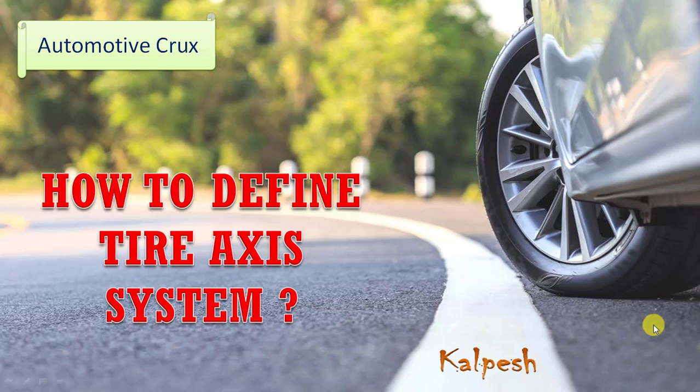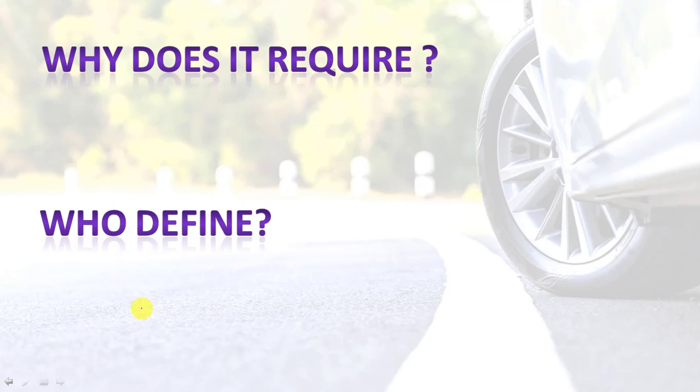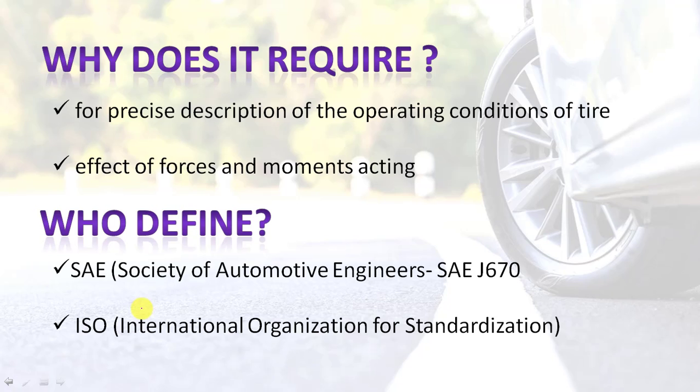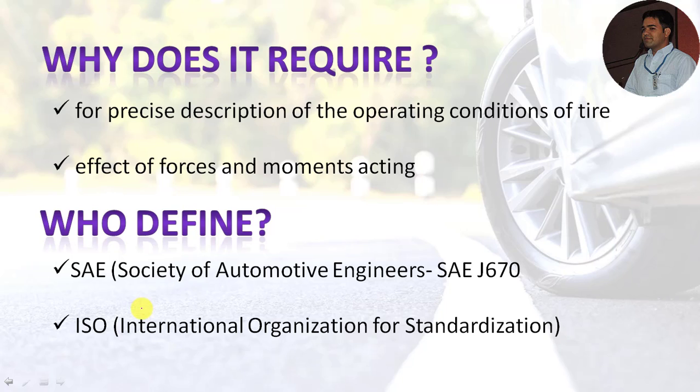Let's discuss about the tire axis system in context with vehicle dynamics. First, we need to understand the requirement of the tire axis system — why it is required. It is needed for precise description of the operating condition of the tire during various operating conditions, and to understand how the tire behaves or responds to the inputs provided by the driver. To understand such behavior of tires, we need some basic standard system.